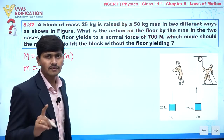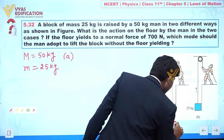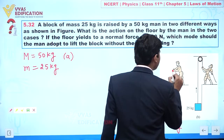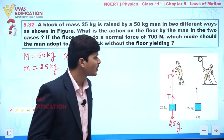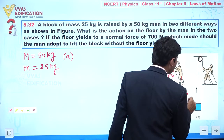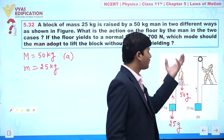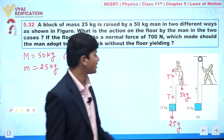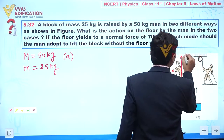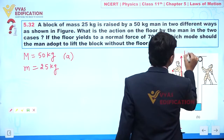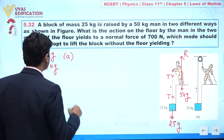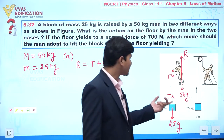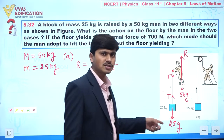In part A, a force of 25G is acting on the block. There is tension T in the string, and in a downward direction on the person, tension T is also acting. The person's weight 50G is acting downward. According to Newton's third law, the floor exerts a normal reaction N upward. So the reaction force is given by tension T plus 50G.